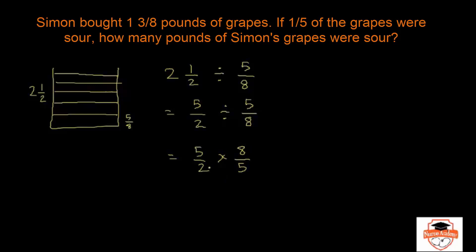And then time for us to cross cancel. 5 and 5 will go off. They cancel each other. You have a 1 here, you have a 1 here. Divide 2 with 2 and 8 with 2.